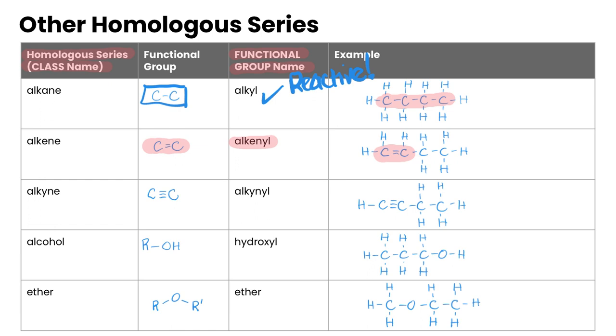The next one, alkynes, has a carbon-carbon triple bond as its functional group. They're called alkyl, and in the example you can see the carbon-carbon triple bond.